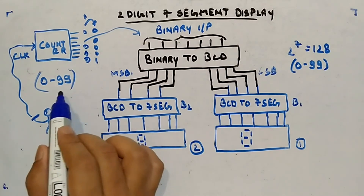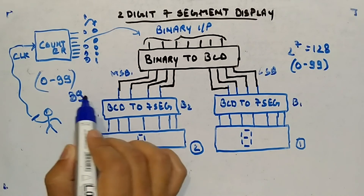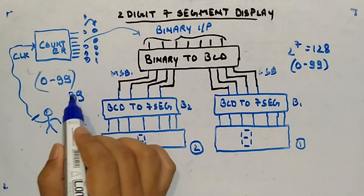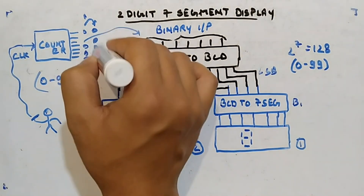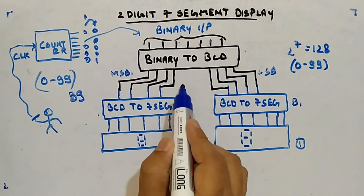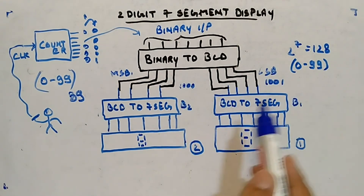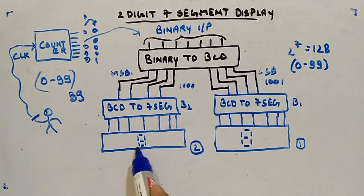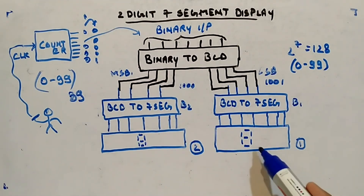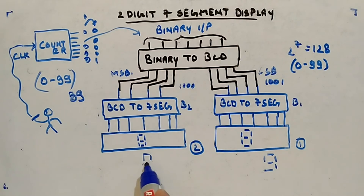The counter counts from 0 to 99. Let's say 89 presses are made — 89 will appear as the binary output. This gets converted: 8 becomes 1000 and 9 becomes 1001. So 89 will be reflected on the two displays — 8 on one and 9 on the other.